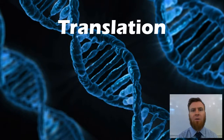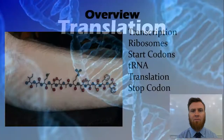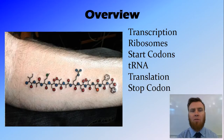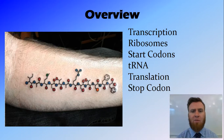Hi guys. In this video we're going to go into a little bit more detail about translation. We're going to talk about the previous step briefly — transcription — then ribosomes that create the polypeptide chains, talk about the start codons, the tRNA or transfer RNA, translation itself, and then the stop codons.